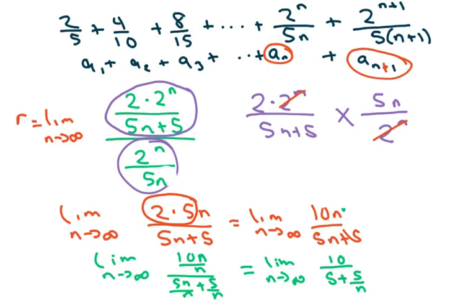And that gives you limit as n approaches infinity of 10 over 5+5/n. And we know from the previous videos that the limit of that is just 0. So I'm going to just knock that out.